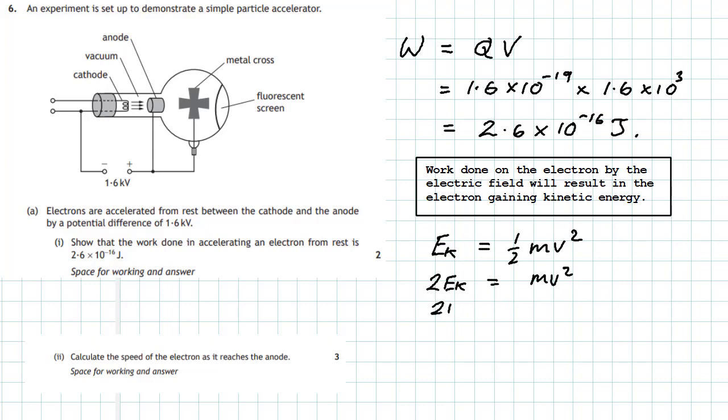Divide by m and we get 2Ek over m equals v squared. Therefore v is going to be equal to the square root of double the kinetic energy the electron gains divided by the mass of the electron itself.